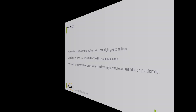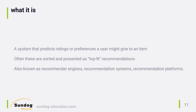So what is a recommender system? More specifically, it's a system that predicts ratings or preferences that a user might give to an item. A recommender system recommends things to people based on their past behavior and the behavior of other people. It's really about recommending stuff to people based on preferences that we learn over time.